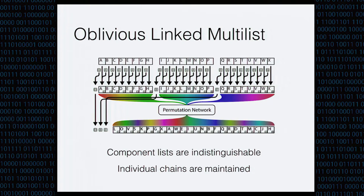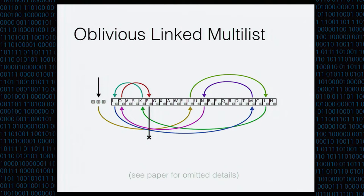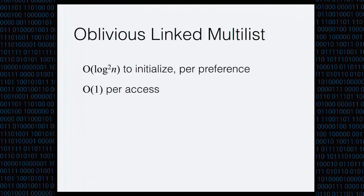We can generalize this into an oblivious linked multi-list by permuting multiple lists together into a single combined data structure and holding all of their entry pointers off to one side. This data structure has two important properties: one, all component lists are indistinguishable at access time — you can't tell from any access which list it was for; and two, all individual chains are maintained so you can follow each one individually to its termination point. Accessing it is simple: reveal one index, find the matching block, reveal the index that comes with it, find the matching block, and so on. The complexity is excellent: initialization costs a sort over all input lists — N sorts at N log-squared N each, so log-squared N per preference to initialize — and access cost is actually constant, assuming you already have the pointer.